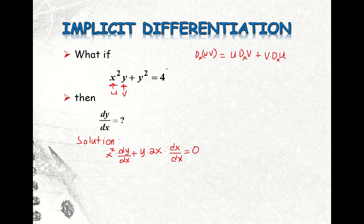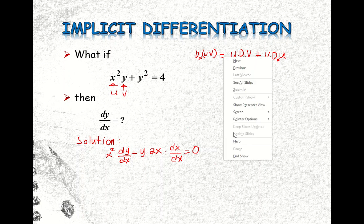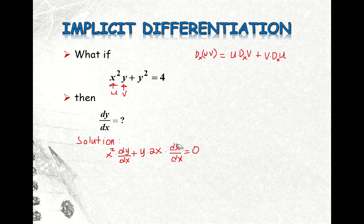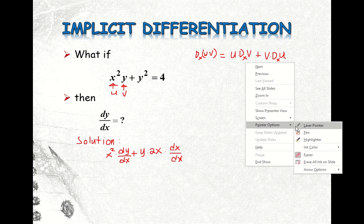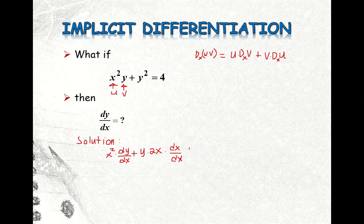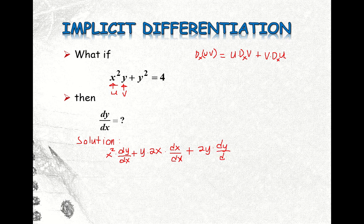Oh sorry, we still have the second term — I missed the second term. So before the right side, we still have the second term. Plus the derivative of the second term: we apply the power rule, so 2 times y, then times the base y, so the derivative of y with respect to x. And then our right side is equal to 0, since the derivative of a constant is equal to 0.